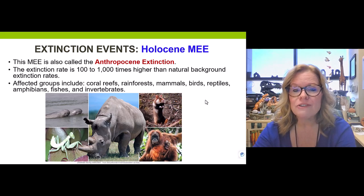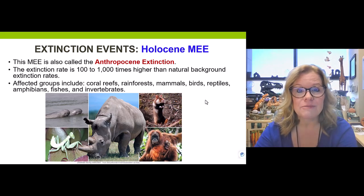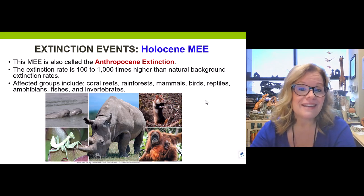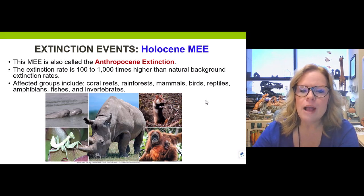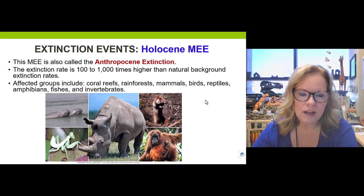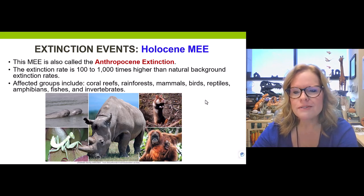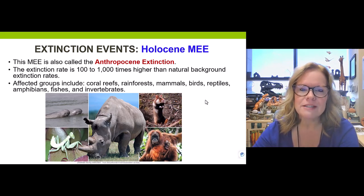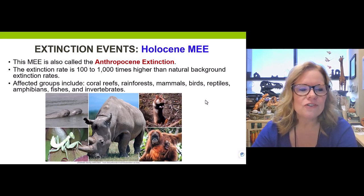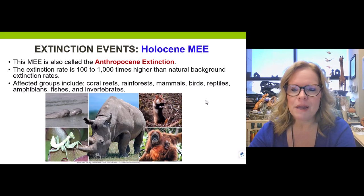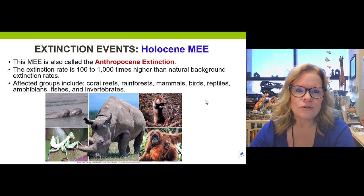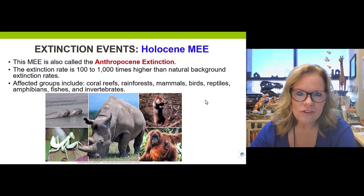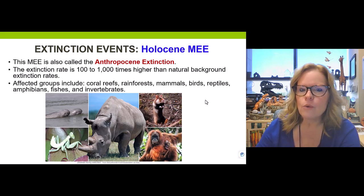The affected groups are not going to surprise you: coral reefs, rainforests, mammals, birds, reptiles, amphibians, fishes, vertebrates — and plant life is involved too. Extinction is happening very rapidly — literally within hundreds of years, sometimes tens of decades. Something is clearly going on. We can look to ancient climate change as a way to help figure this out.